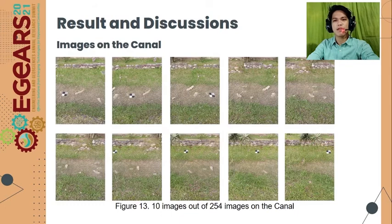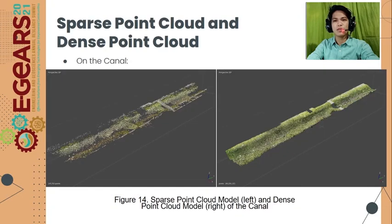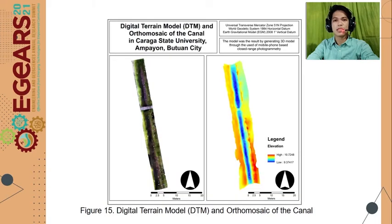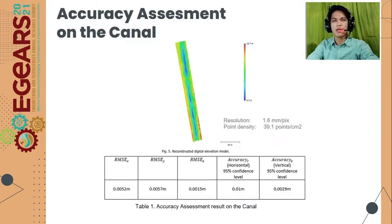For the results, a total of 254 images were captured of the test canal. From the images gathered, using specialized software, we generated the sparse point cloud and dense point cloud of the test canal, which were used to generate the orthomosaic and digital elevation model. The generated orthomosaic and digital terrain model show the canal where red indicates the highest elevation and blue indicates the lowest. The canal achieved a horizontal accuracy of 0.01 meter and a vertical accuracy of 0.0029 meters at 95% confidence level. The generated DEM has a spatial resolution of 1.6 mm per pixel.